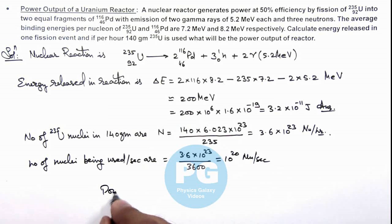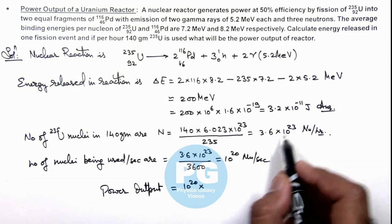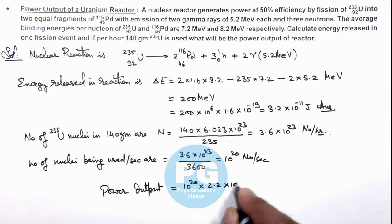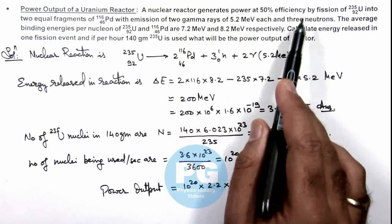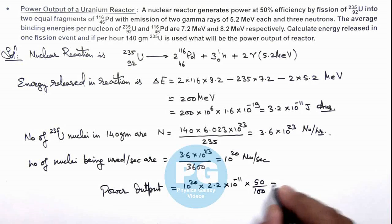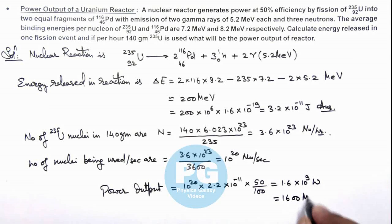So directly we can calculate the power output of the reactor, which can be given as 10 to the power 20 multiplied by the energy released in 1 event, which is 3.2 into 10 to the power minus 11. This is the total amount of energy released by the uranium, and since the reactor is generating power at 50 percent efficiency, we multiply by 50 over 100. This gives us 1.6 multiplied by 10 to the power 9 watts, or 1600 megawatts — that is the power output of the reactor, which is the result of this problem.